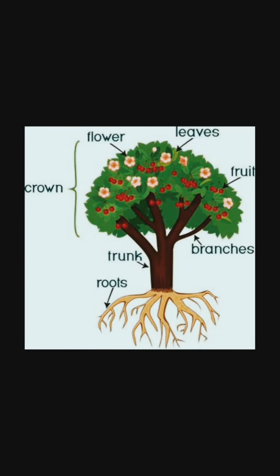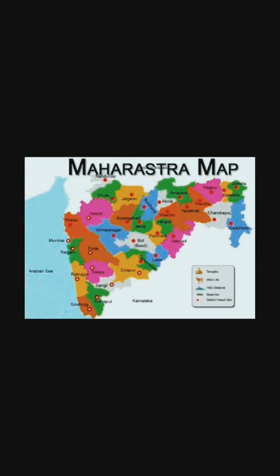Children, what do you see in this picture? Yes, it's a tree. Now, children, to be complete, a tree must have several components such as leaves, small branches, big branches, a trunk, root, etc. Children, in the same way, our state too is made up of many settlements, villages, towns, talukas, and districts.